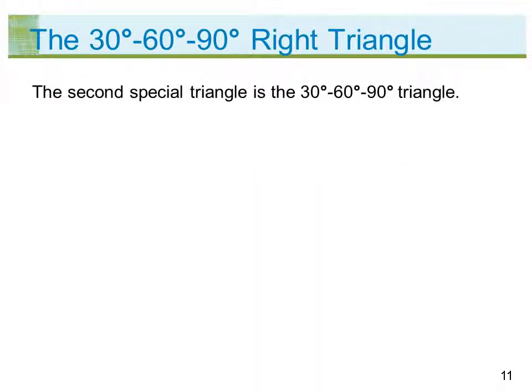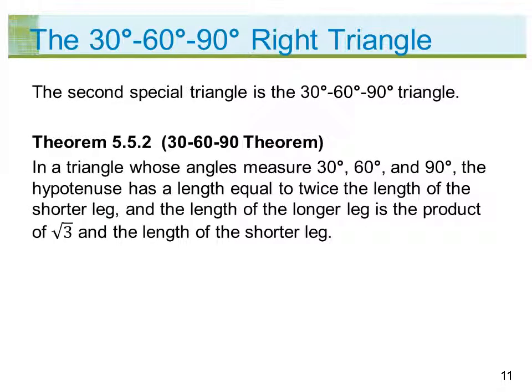The second special triangle is the 30-60-90 degree triangle. Theorem 5.5.2 — 30-60-90 Theorem: In a triangle whose angles measure 30 degrees, 60 degrees, and 90 degrees, the hypotenuse has a length equal to twice the length of the shorter leg, and the length of the longer leg is the product of square root of 3 and the length of the shorter leg.